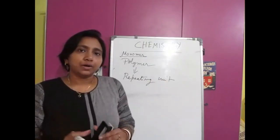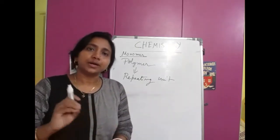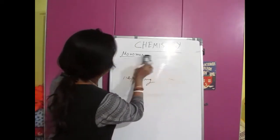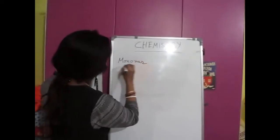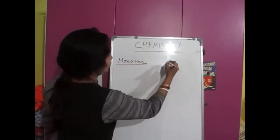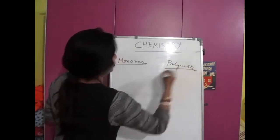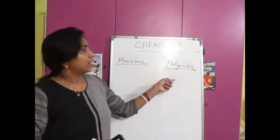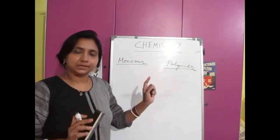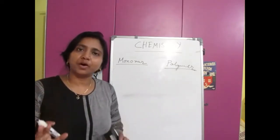Now I will show a few structures of the polymers and also tell the applications. First I will write the monomer structure, then I will get the polymer structure. First of all, I will give the most common example — that is called polyethylene.